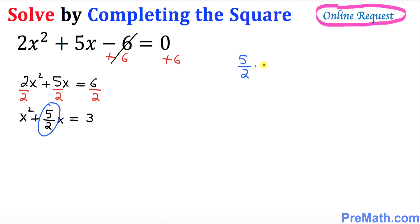I want you to divide this fraction by 2. Dividing by 2 is the same as multiplying by 1/2. Multiply these two fractions: on the top, 5 × 1 = 5, divided by at the denominator 2 × 2 = 4. So 5/4. Now square this quantity.